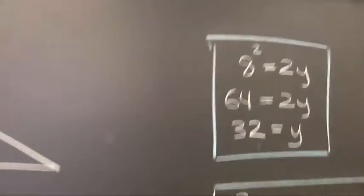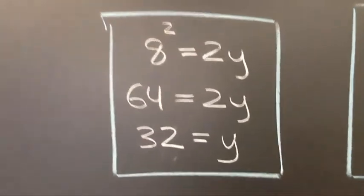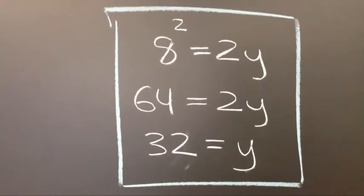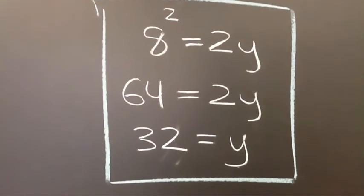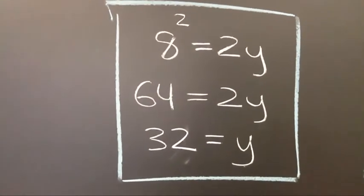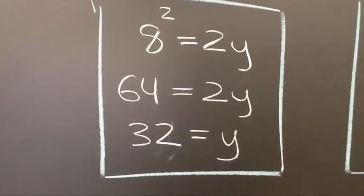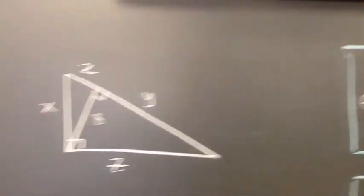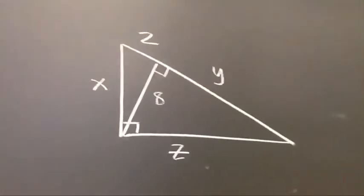So that means I come over here and I write the following equation. 8 squared is 2 times y. So 64 is 2 times y. And so now I know y is 32.